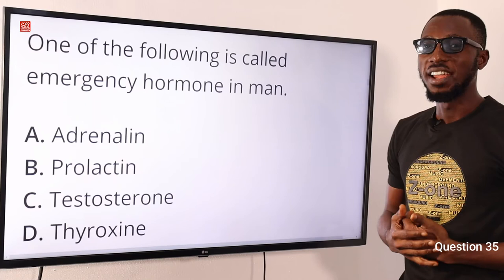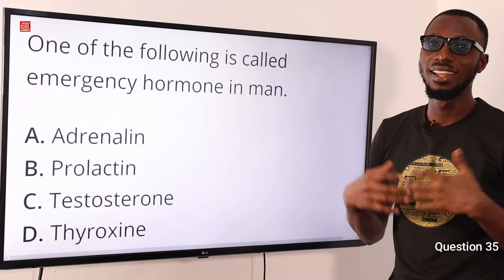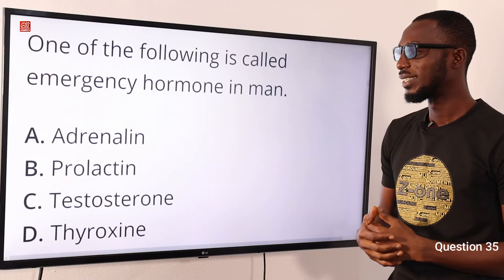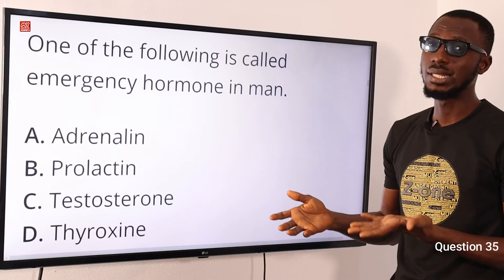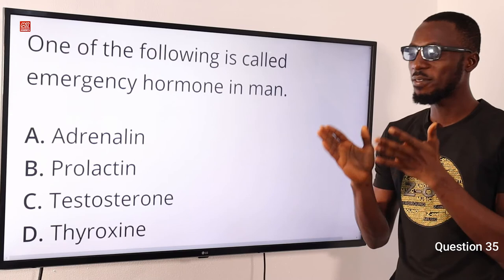Question 35: One of the following is called the emergency hormone in man. That is adrenaline — adrenaline and noradrenaline are emergency hormones associated with the fight-or-flight response. Prolactin stimulates milk production in pregnant women. Testosterone is responsible for development of male secondary sexual characteristics. Thyroxine from the thyroid gland is about growth and development. So the correct option is option A for adrenaline — the emergency hormone.